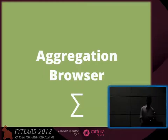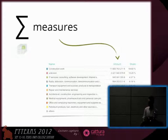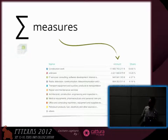Another component is the aggregation browser. This is the main object which allows you to do the aggregations — to aggregate the measures of your facts. For example, here you have the aggregations of the contracts by a particular segment, and it also allows you to get a more detailed look at your data.